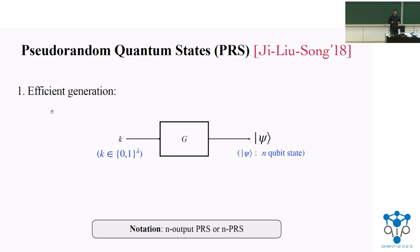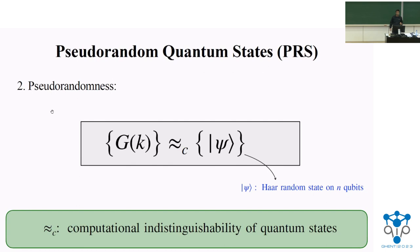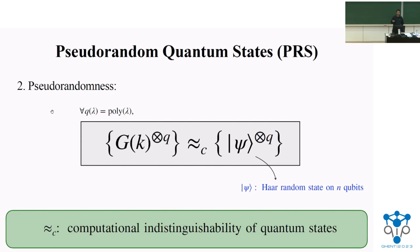The second property is the pseudorandomness property, which states that the output of the pseudorandom state generator should be computationally indistinguishable from the Haar distribution on n-qubit states. We need something stronger: given the no-cloning property, if you just have one copy you cannot produce multiple copies. So you need a stronger security definition where even given multiple copies of a PRS state, it should be computationally indistinguishable from multiple copies of a Haar state.